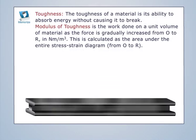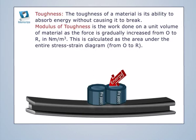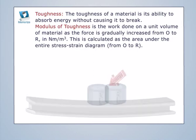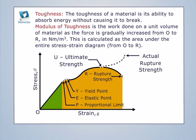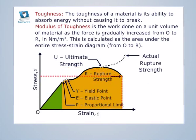Toughness is the ability of a material to absorb energy without causing it to break. The Modulus of Toughness is the work done on a unit volume of material as the force is gradually increased from O to R, measured in Nm per m³. It is calculated as the area under the entire stress-strain diagram from O to R.